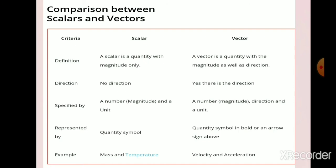Scalars are represented by the quantity symbol, whereas vectors are represented by the quantity symbol in bold letters or with an arrow sign above the symbol. For scalars, examples are mass and temperature, whereas for vectors the examples are velocity and acceleration.